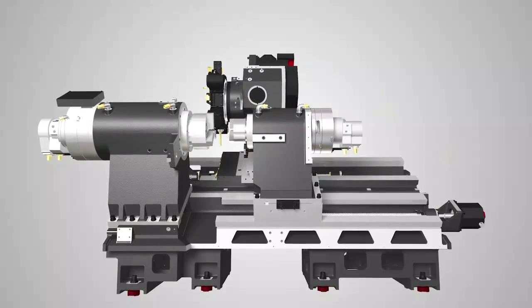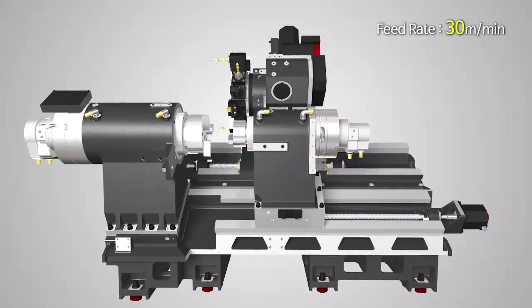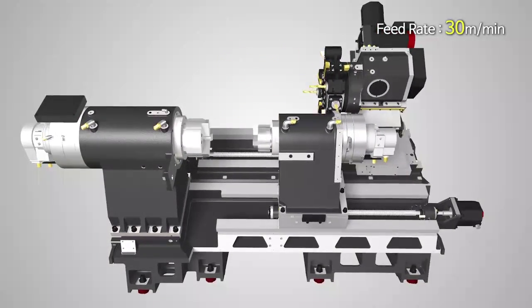Rapid feed rate of X, Y and ZB axis is 30m per minute. With this high speed, productivity can be improved.